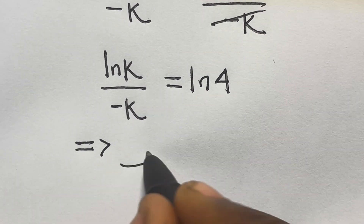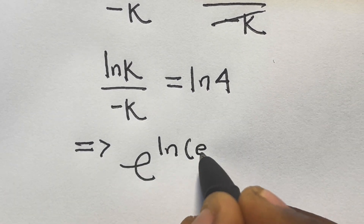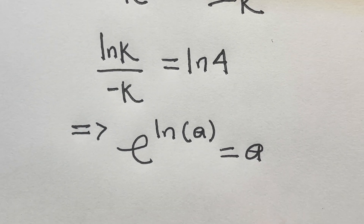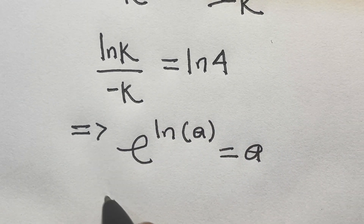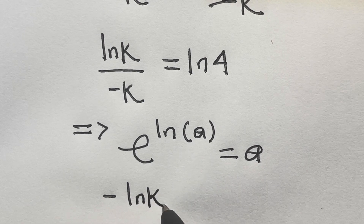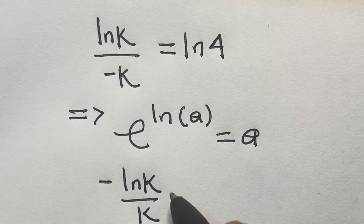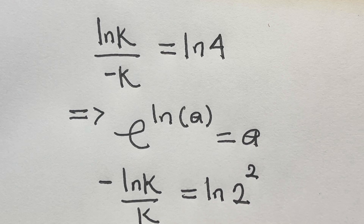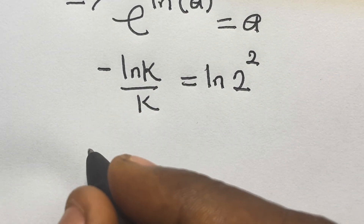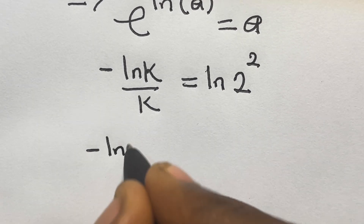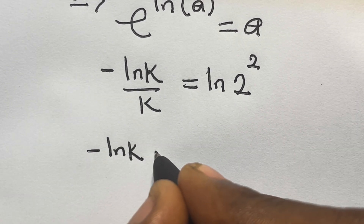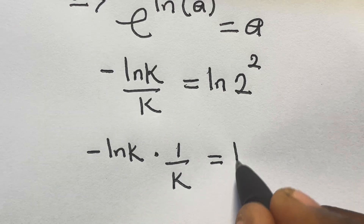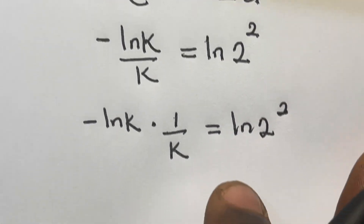Let's recall that exponential of ln a equals a, so exponential and ln cancel. We have minus ln k divided by k equals ln 4, which can be expressed as ln of 2 squared. So we have minus ln k times 1 divided by k equals ln 2 raised to the power 2.